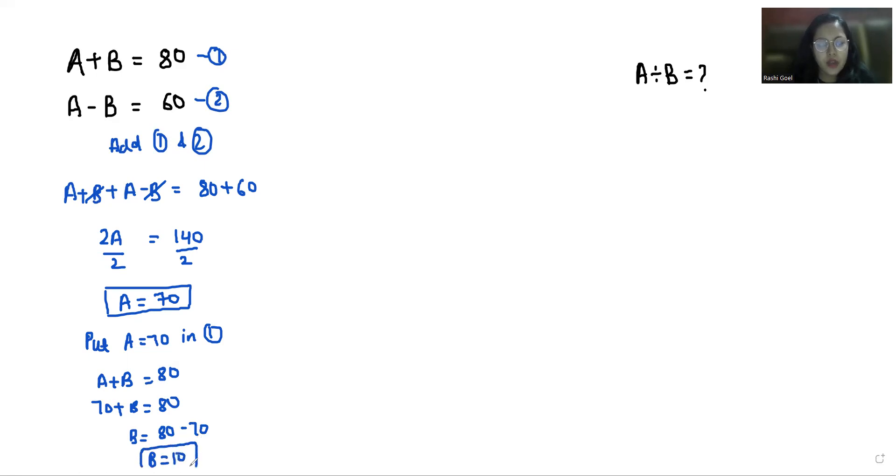Now we have to calculate the value of a divided by b. So 70 divided by 10 which is 7.